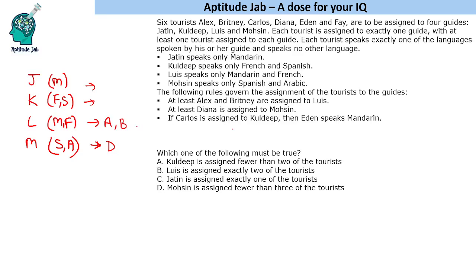Another condition: if Carlos is assigned to Kuldeep, then Eden speaks Mandarin. So Eden can be assigned to Jatin or Louis. But if Carlos is not assigned to Kuldeep, this condition does not apply — we cannot say what language Eden speaks. Now let us answer the questions based on these conditions. The question asks: which of the following must be true?